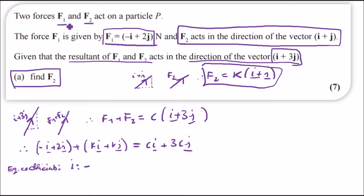We have negative 1 plus k and this is supposed to equal to c on the right side, so these three.